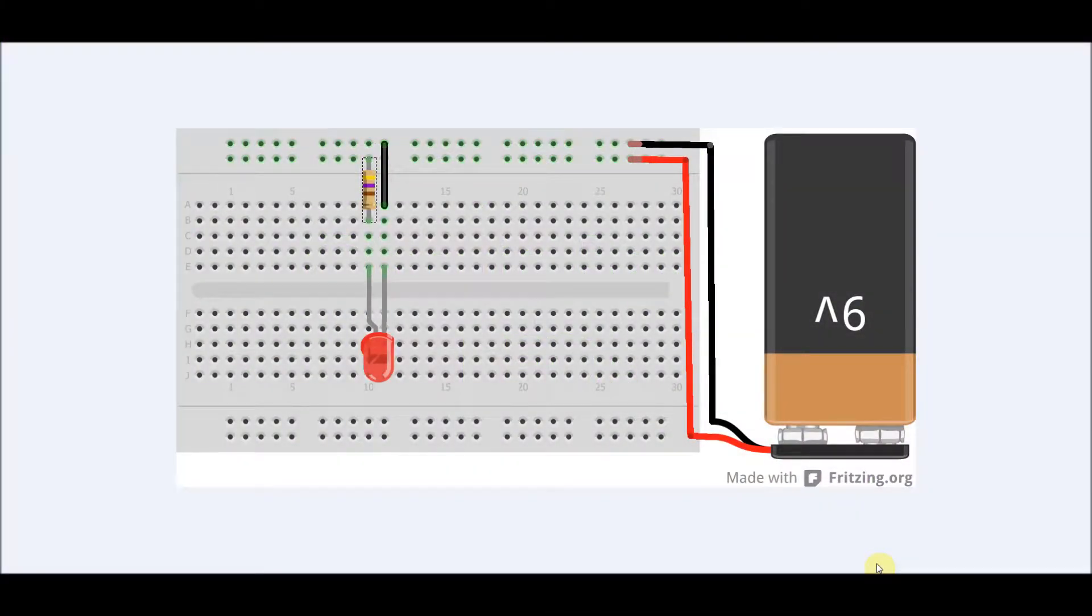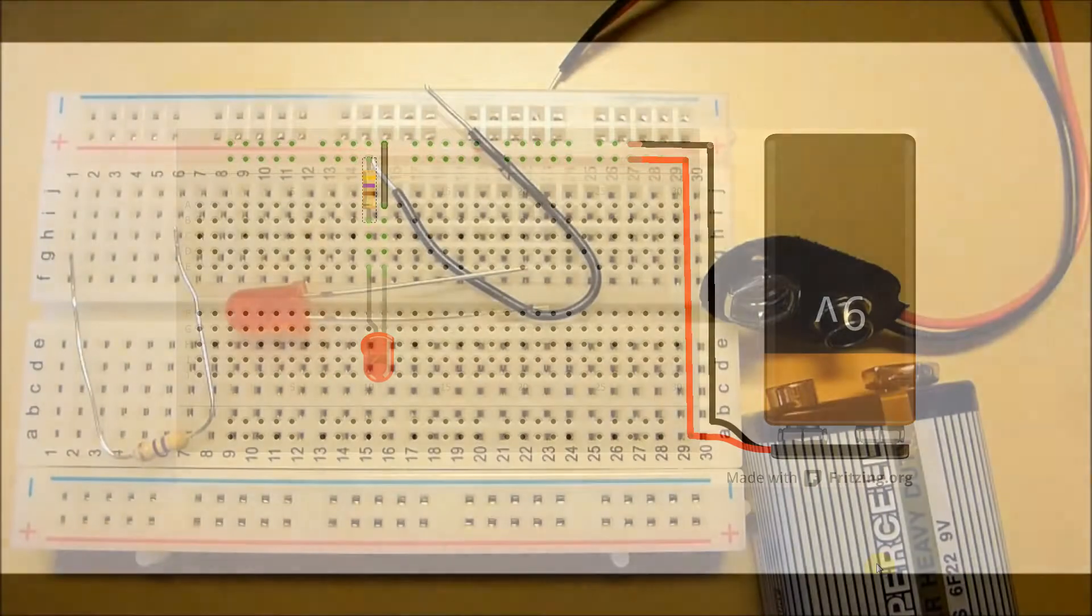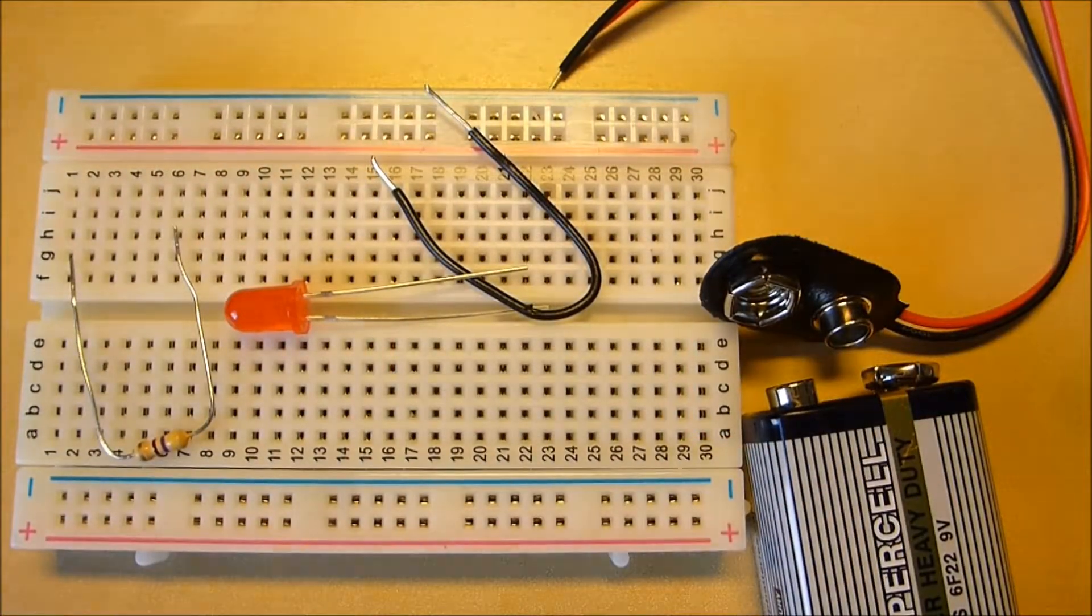Right, so this is the first circuit we're going to make, just connecting a 9V battery to an LED through a resistor. And here's that circuit in physical form.